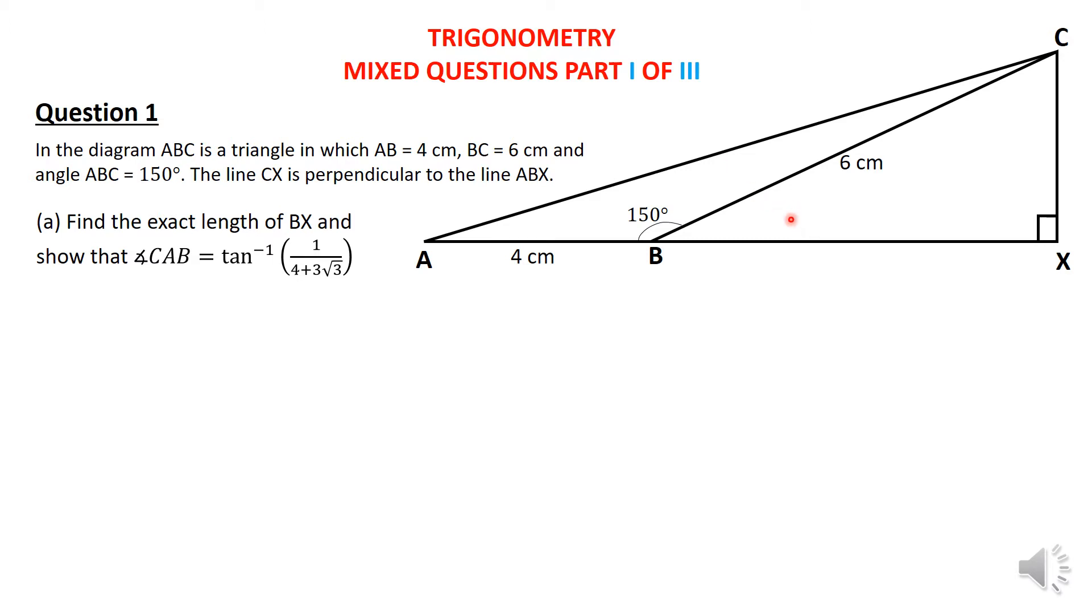Find the exact length of BX. So you have to find what BX is and then you're supposed to show that the angle CAB, that is this little acute angle here, is equal to arctangent of 1 upon 4 plus 3 root 3. Right, so I'm going to go ahead and calculate this missing angle here, which is 30 degrees because you can easily see that, should add up to 180.